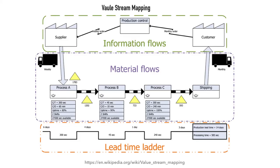TPS also introduces value stream mapping. With value stream mapping, you look at information flows as well as material flows. Material flows from raw material on the left-hand side to the produced and shipped material on the right-hand side, with processes A, B, C in between. You measure how long each work center takes — for example, process A takes 300 seconds, process B takes 45 seconds but has a four-day wait period before it starts. You measure the total lead time, which might be 14 days, whereas the actual processing time is only about 585 seconds. Once you measure things, you can start optimizing.